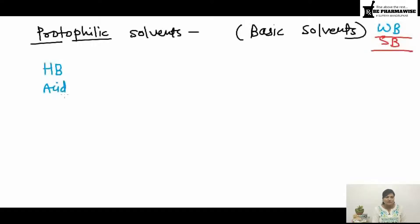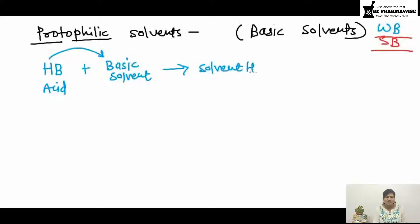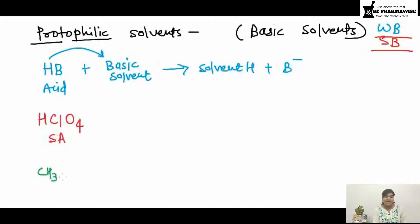Suppose HB is an acid and we are treating it with a basic protophilic solvent. Being an acid, it will donate the H+ ion to the solvent and form solvent-H+ or solvent-H+ B−. Now I will take two acid examples: perchloric acid (HClO4), which is a very strong acid, and acetic acid (CH3COOH), which is a comparatively weaker acid. We will study what happens when they are reacted with a weakly basic solvent.